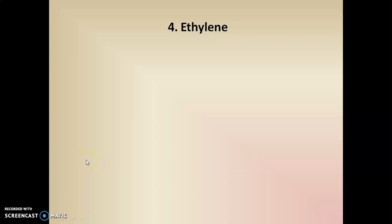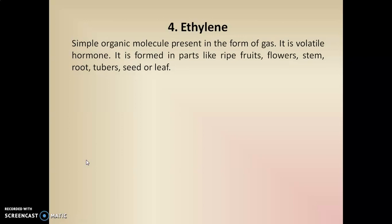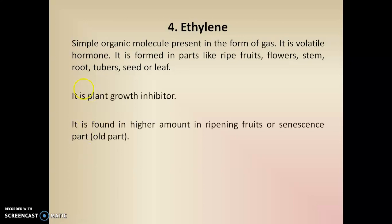The fourth plant hormone is ethylene, which is present in gaseous form and is a plant growth inhibitor. It is a simple organic molecule present as a gas and is volatile in nature. It is generally present in parts like ripe fruits, flowers, stem, roots, tubers, seeds, and leaves. Ethylene is found in higher amounts in ripened fruits or in senescent parts — that is, parts which have become old.